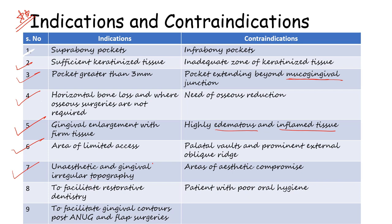Unaesthetic and irregular topography — by topography we mean gingival form and gingival contours. Vertical grooves over the gingiva — if this topography gets disturbed, then the gingivectomy procedure is taken into consideration. Area of aesthetic compromise is again a contraindication. To facilitate restorative dentistry — if any kind of subgingival caries are present, we will excise the gingival tissue and do the restoration of that particular caries. To facilitate gingival contours — after flap surgeries, gingiva loses its form and anatomy, so in order to achieve the same, especially in aesthetic areas, we need the gingivectomy procedure. Patient with poor oral hygiene is a contraindication for every kind of periodontal surgery.